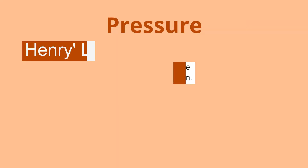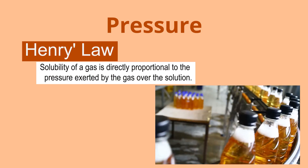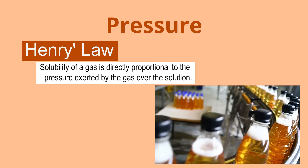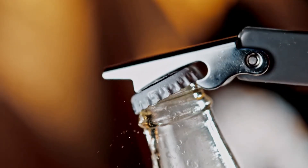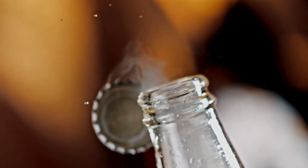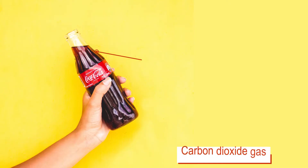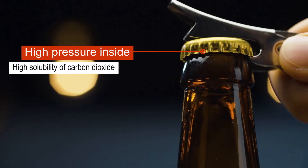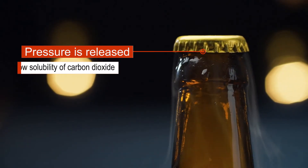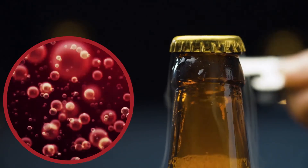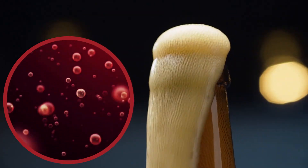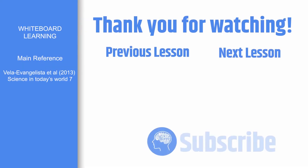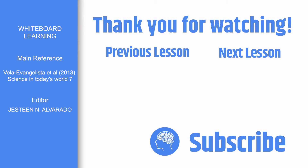In a solution of gas in a liquid, the amount of gas dissolved is directly proportional to the pressure exerted by the gas over the solution. This is called Henry's Law. It explains what happens when you open a bottle of soft drink — carbon dioxide gas is incorporated in the drink through high pressure. When you open the bottle, the pressure inside decreases, so the solubility of carbon dioxide also decreases, making the soft drink bubble or fizz.